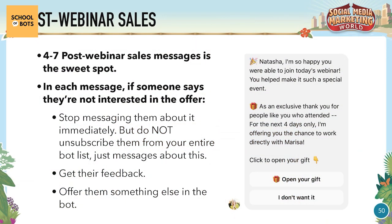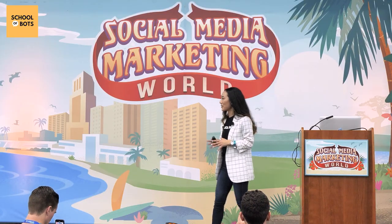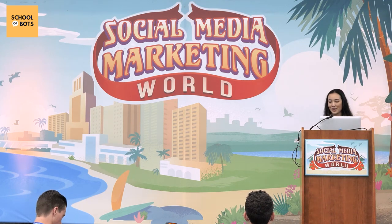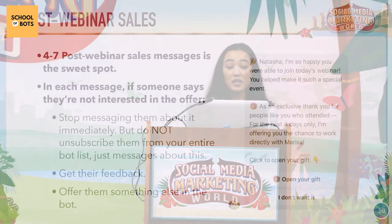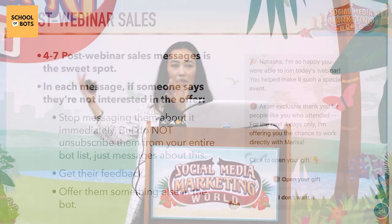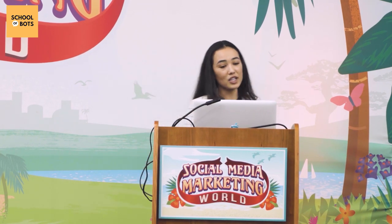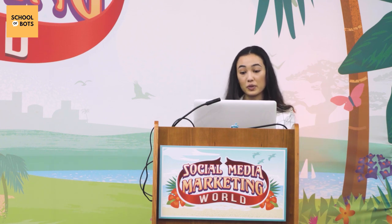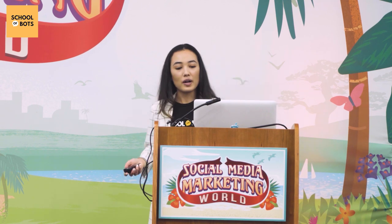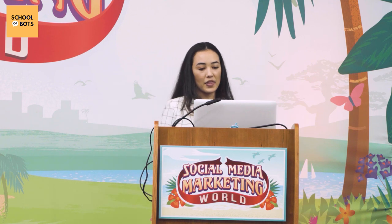In each message, if someone says they're not interested in the offer, here are three things to do: First, stop messaging them about it immediately. With email people are more saturated and may not single you out, but with Messenger — where people aren't getting hundreds of messages — they will notice if you keep messaging about something they already said no to. You can unsubscribe them from just these messages without removing them from your entire bot list, and then find out what they are interested in.